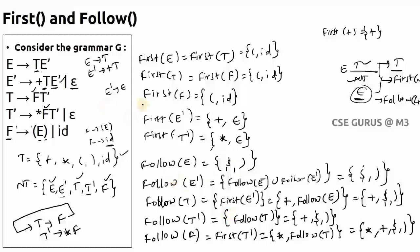To summarize: when finding Follow of a non-terminal, remember three rules — if the next symbol is a terminal, write it directly; if it's a non-terminal, find its First set, and if that First includes epsilon, also take the Follow of the production's left-hand side; if there's no symbol after it, take the Follow of the left-hand side. That's how you find First and Follow sets easily. If you have any doubts, comment below. Thank you.